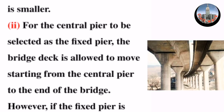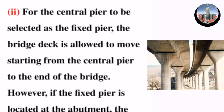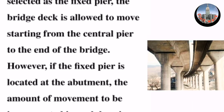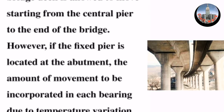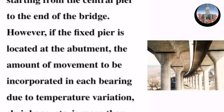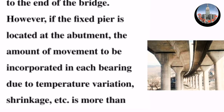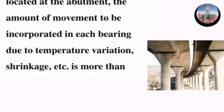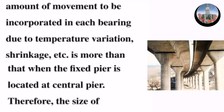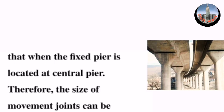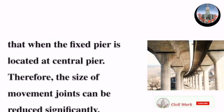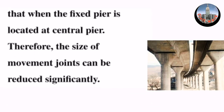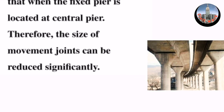However, if the fixed pier is located at the abutment, the amount of movement to be incorporated in each bearing due to temperature variation, shrinkage, etc., is more than that when the fixed pier is located at the central pier. Therefore, the size of movement joints can be reduced significantly. Thanks for watching.